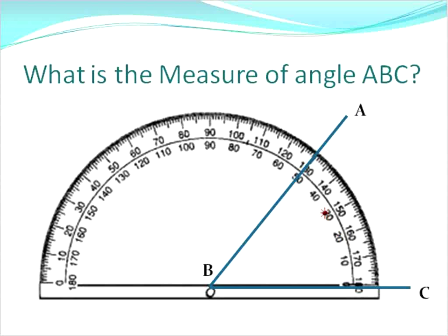Then this angle we would measure up from zero, 10, 20, 30, 40, to the point of 50. So angle ABC has a measurement of 50 degrees. Again, you're measuring the interior of the angle, starting at zero and moving your way up.